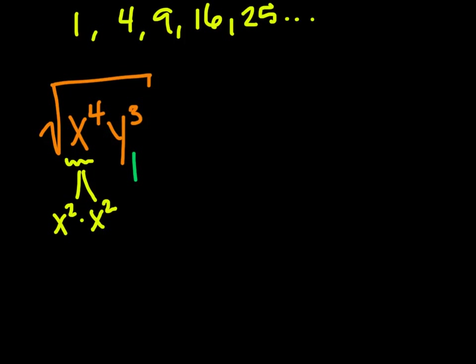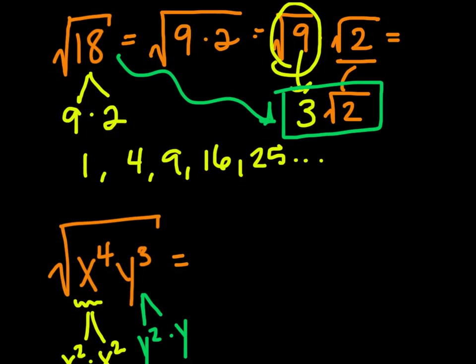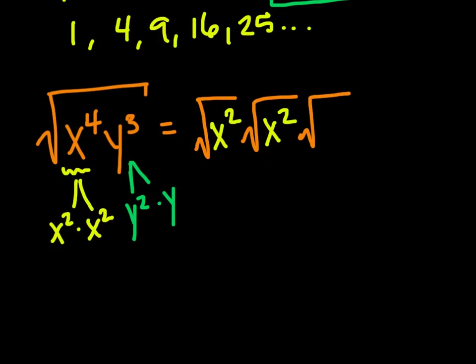Thinking along those same lines, we can do the same thing with y to the 3rd — we can say it's y squared times y. So if we rewrite this the same way we did the square root of 18, we get the square root of x squared times the square root of x squared times the square root of y squared times the square root of y. All of this can equal various answers.